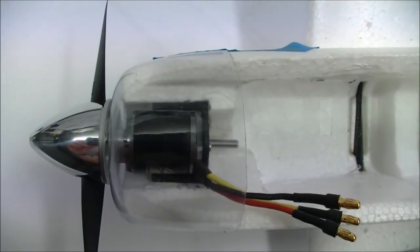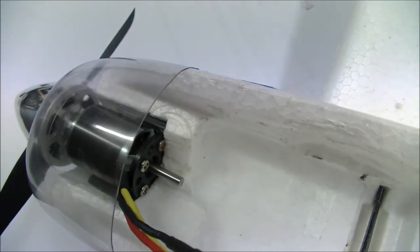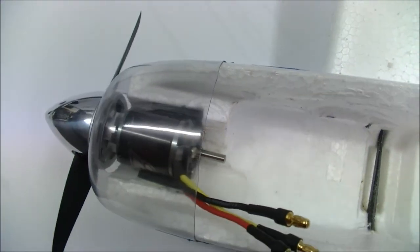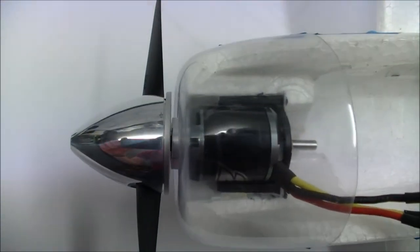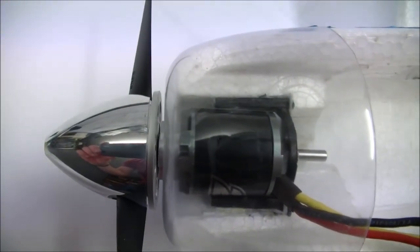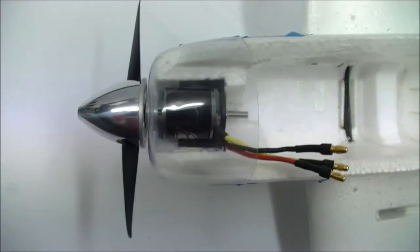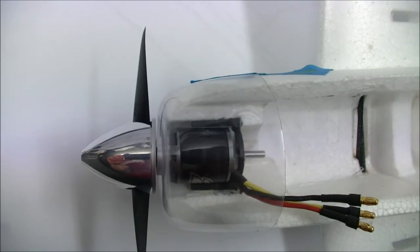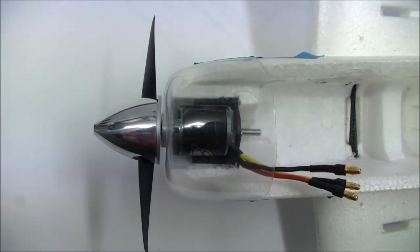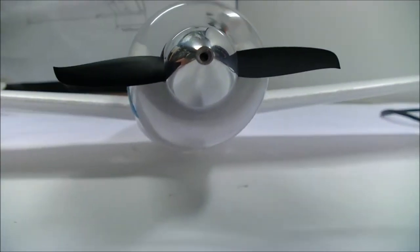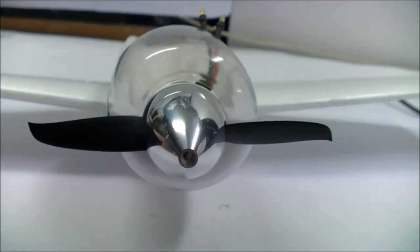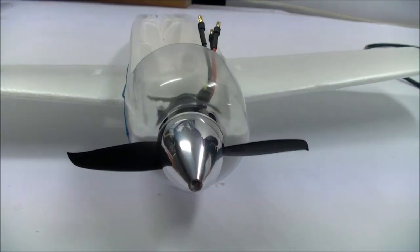So this is the engine in its final position. Nothing's glued in yet. Everything's just placed here just to make sure. We've got perfect clearance between the spinner backing plate and the nacelle. And also the offset to the right for the engine is also looking pretty good. Front view, looking perfect. Time to glue it in.